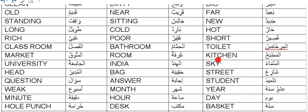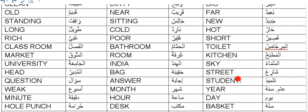Al-Samaahu, sky. Al-Hindu, India. Al-Jamayah, university. Shari'un or Shari'ah, street. Haqibah, bag. Al-Mudiru - not Mudirun, it is Al-Mudiru - means head or chief. Talmizah, student. Talmizah for the female student and Talmizah for the male student.